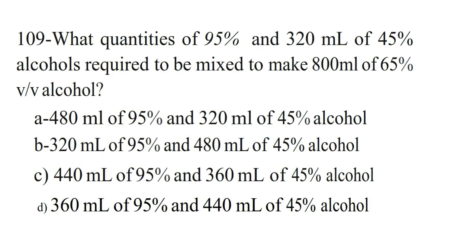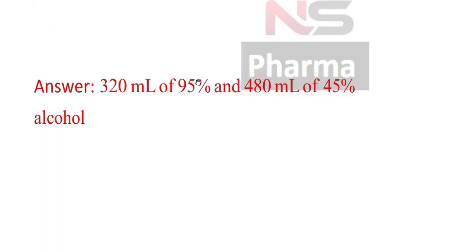Next question. What quantities of 95% and 45% alcohol are required to be mixed to make 800 ml of 65% volume per volume alcohol? Option A. 480 ml of 95% and 320 ml of 45% alcohol. Option B. 320 ml of 95% and 480 ml of 45% alcohol. Answer: 320 ml of 95% and 480 ml of 45% alcohol.